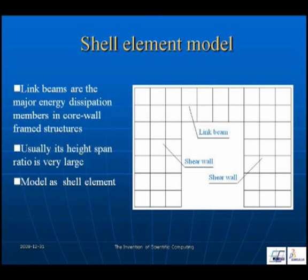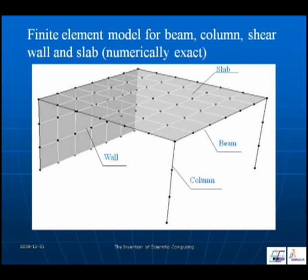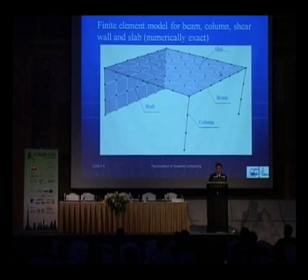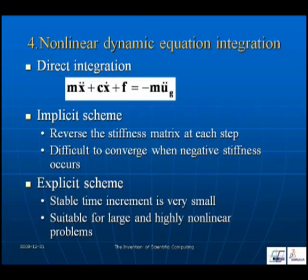Coupling beams are the major energy dissipation members in core wall frame structures. Usually the span-to-depth ratio is very small. We model coupling beams as shear elements to account for the shear, flexural, and axial interaction, which is numerically accurate. Here is an example extracted from a real building showing one story, demonstrating how we match beam, column, slab, and wall at both the line element and shear element levels.